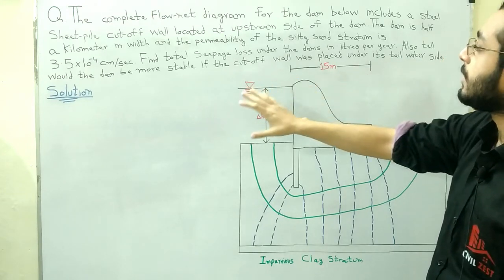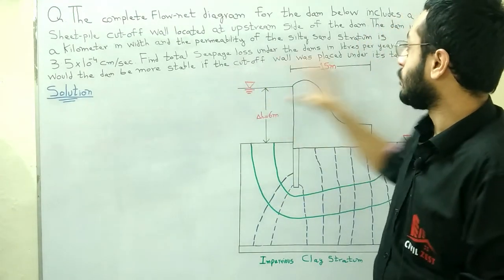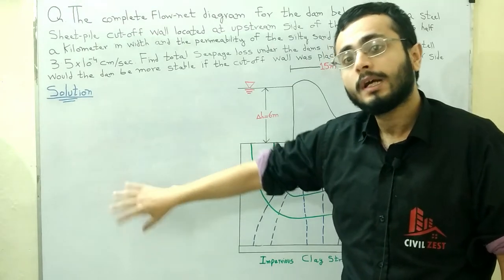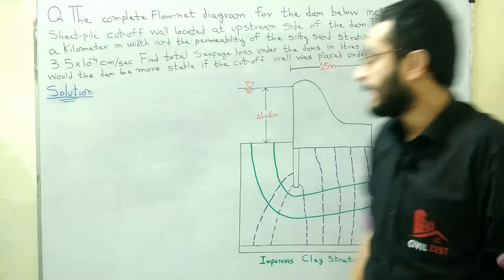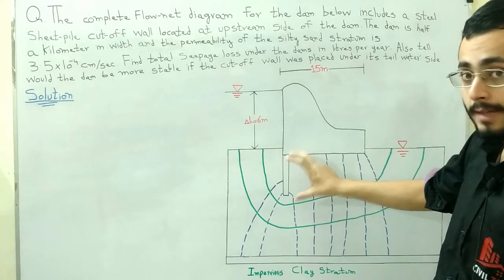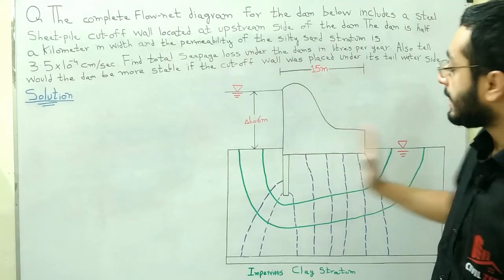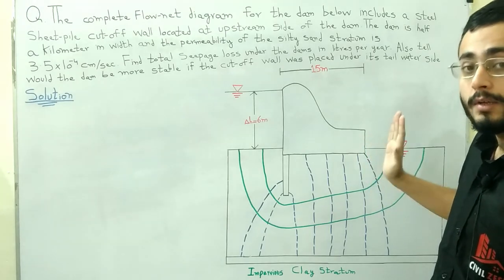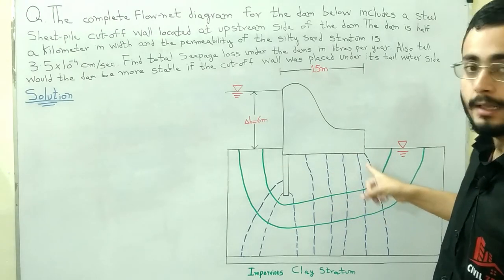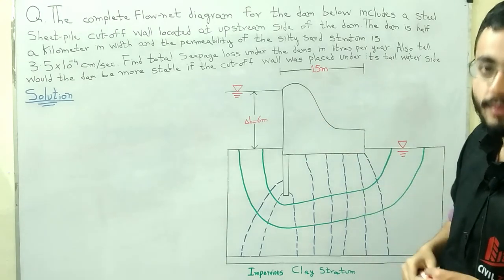We need to find the total seepage loss under the dam in liters per year. We also need to determine whether the dam would be more stable if the cutoff wall was placed on the downstream side. So there are two parts: first, find the seepage loss using q = k × Δh × Nf / Nd, and second, discuss the effect on dam stability.